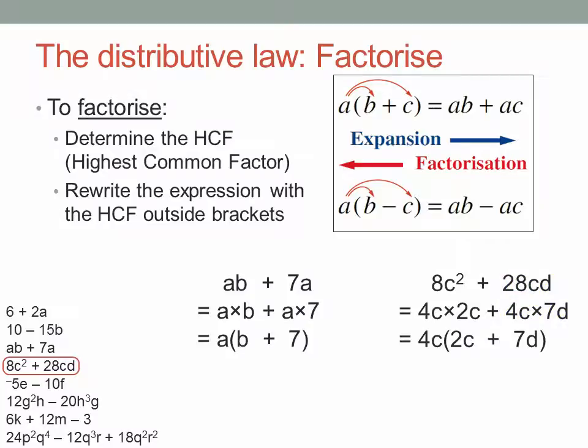So if I take out the common factor, I get 4c times brackets, 2c plus 7d, close bracket. Let's check it. 4c times 2c is 8cc, which is 8c squared. And 4c times 7d is 28cd. Good.